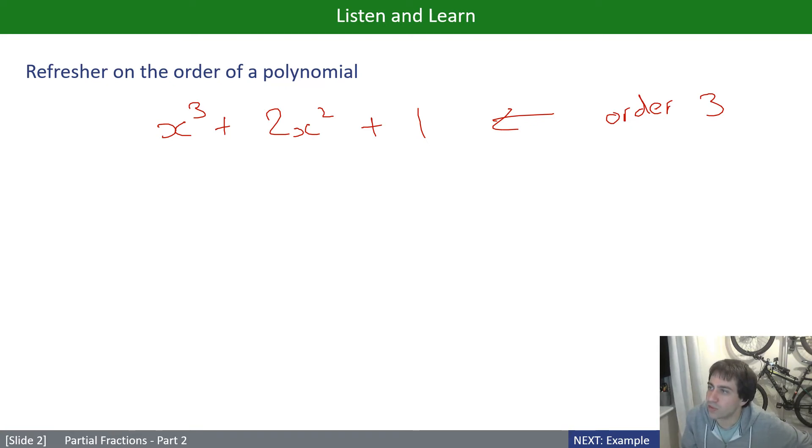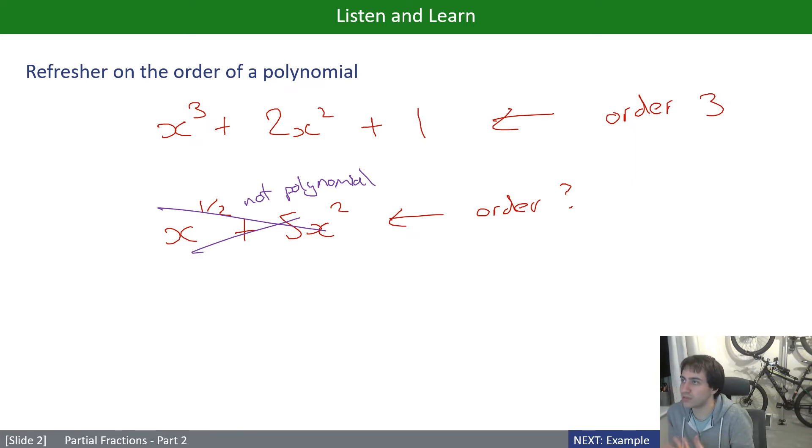What if it was a fractional power? What if I had something like this? What is the order? Well, in this case, the answer is basically invalid question. This is not a polynomial. Technically not, right? It looks a bit like a polynomial, but it technically isn't, because by definition, a polynomial must have integer powers.